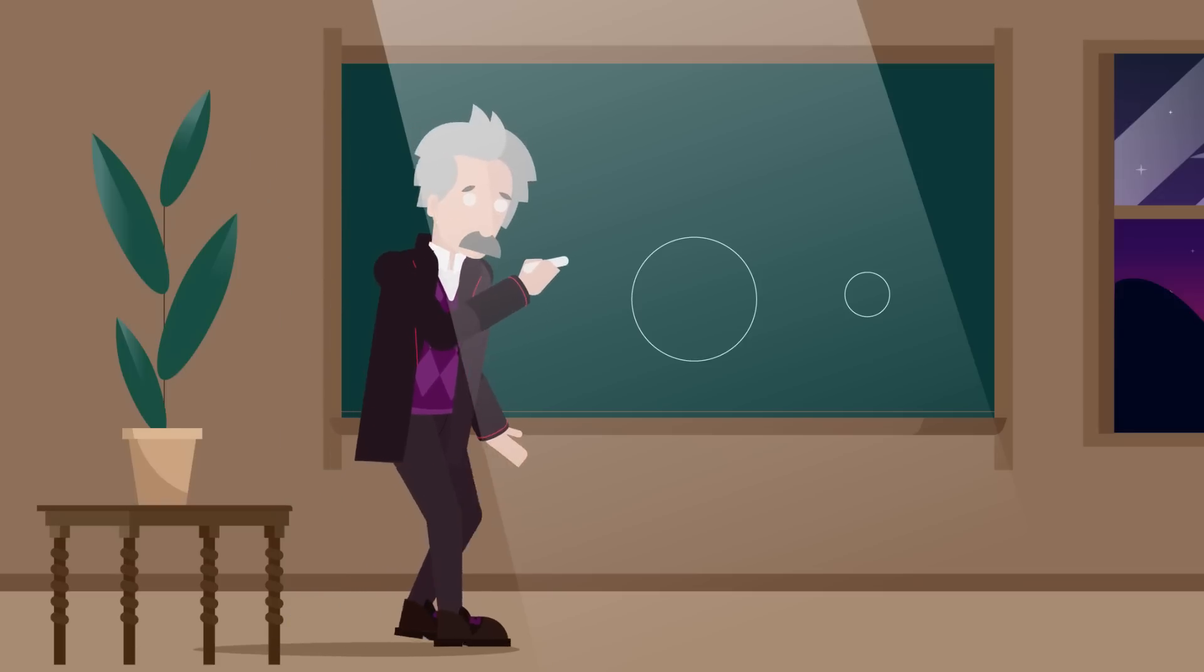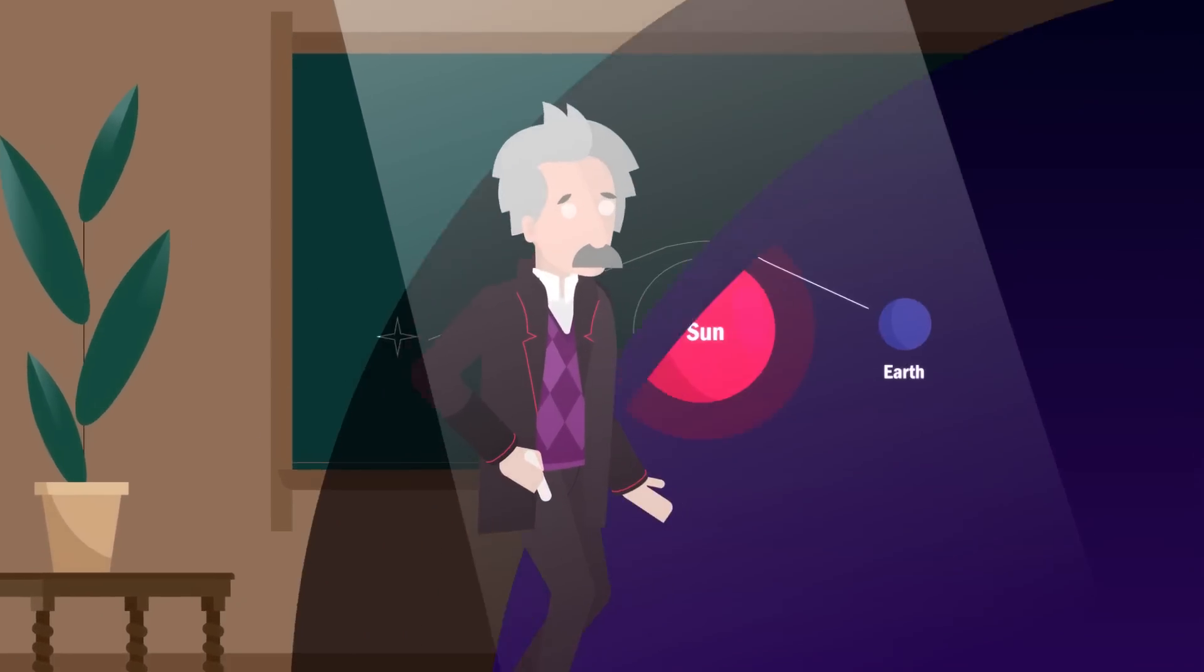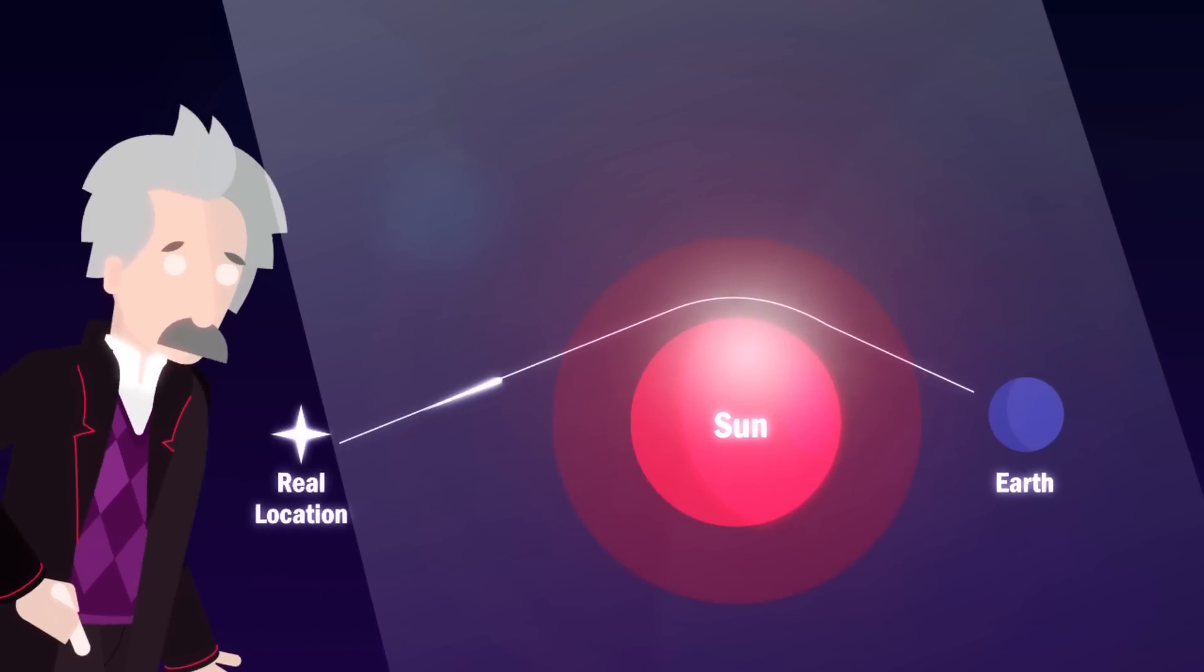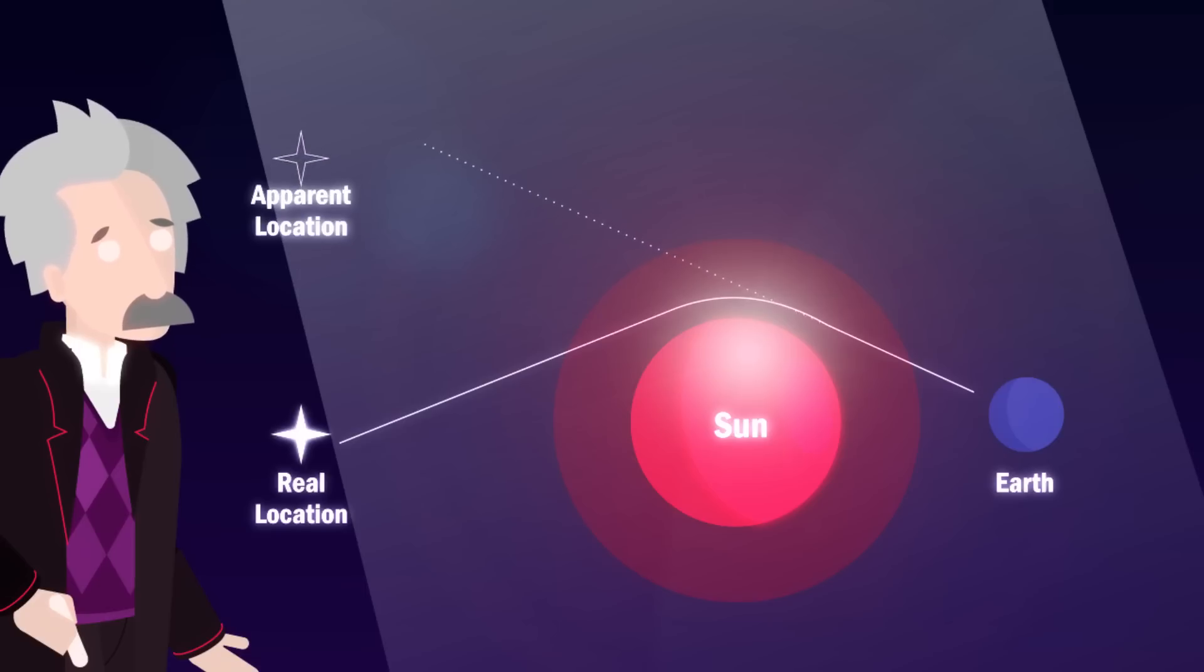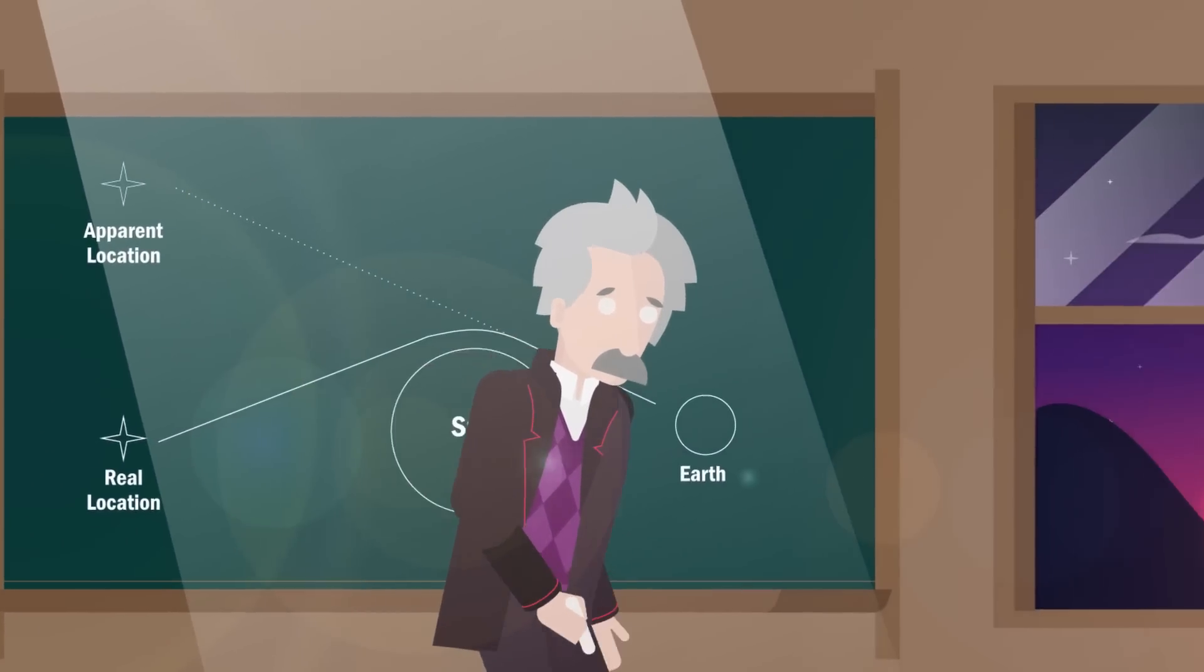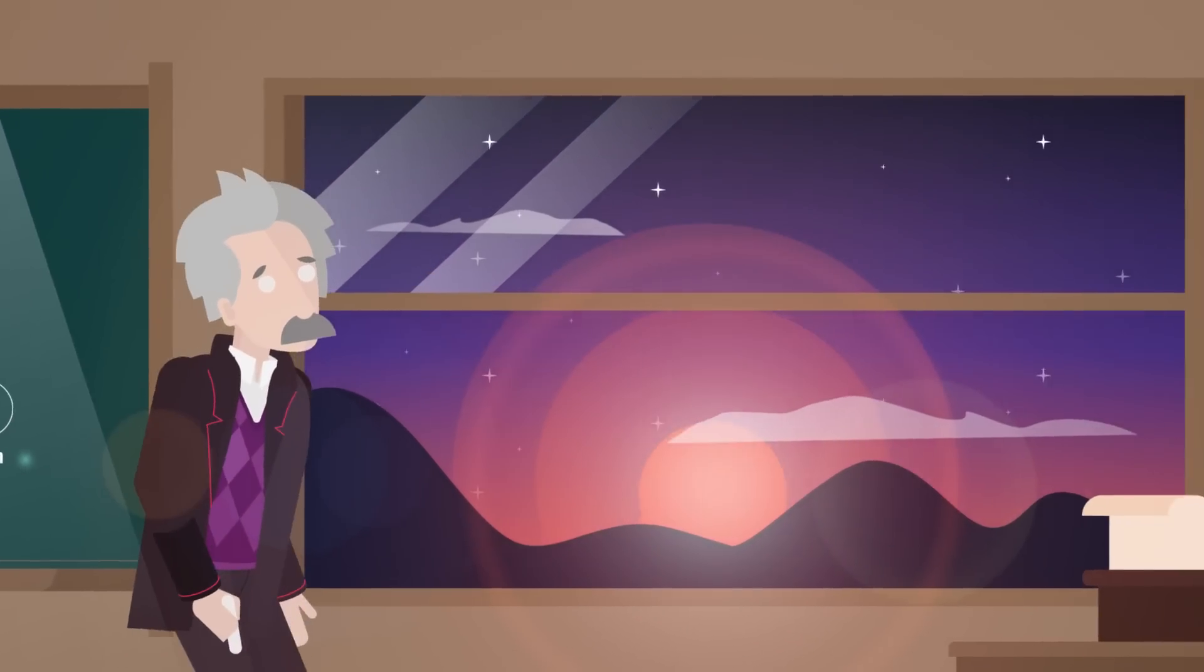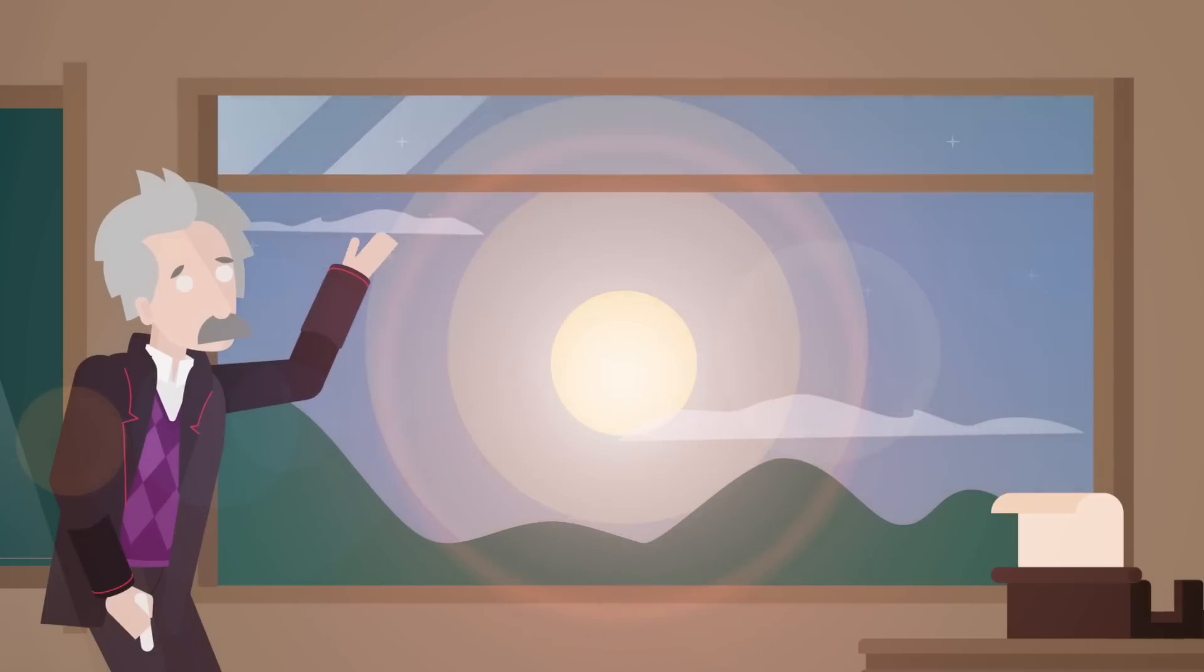Einstein had predicted that the space-time deformation would also deflect the path of light. Thus, background stars' light should be bent by the sun's gravity, so that these stars would appear displaced in the sky's zone next to the sun. What was the problem? Hard enough to believe, that jaw-dropping prediction seemed impossible to test, because the sun's daylight blocks out the stars.